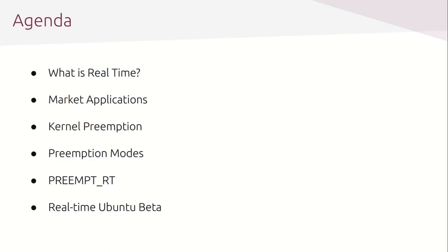Central to the whole concept of real-time is preemption. We are going to discuss what preemption is all about, as well as the current preemption modes available in mainline Linux and their limitations — and why there is a need for a patched PREEMPT_RT that is not yet fully upstream. It is slowly being mainlined, but is not yet fully upstream. We will take a look at the addition of PREEMPT_RT over the currently existing preemption modes.